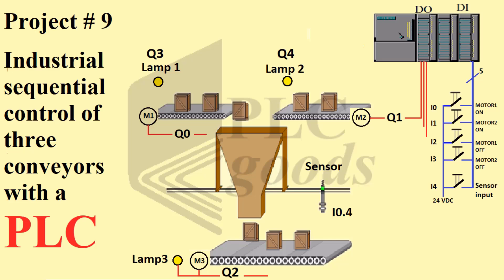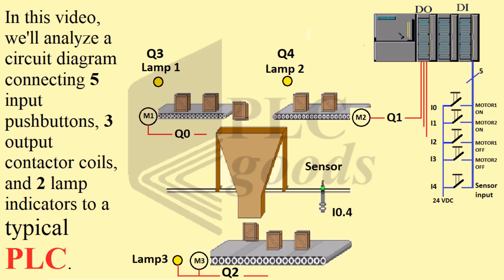Project number nine: industrial sequential control of three conveyors with a PLC. In this video, we will analyze a circuit diagram connecting five input push buttons, three output contactor coils, and two lamp indicators to a typical PLC.